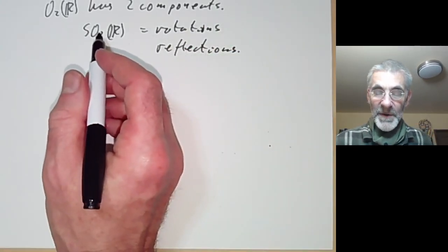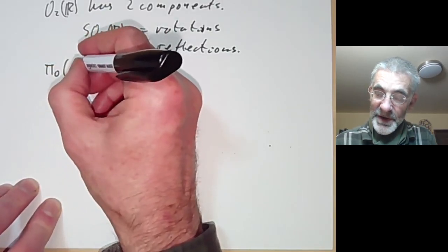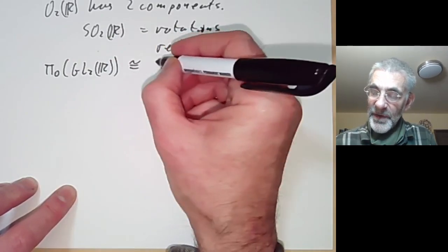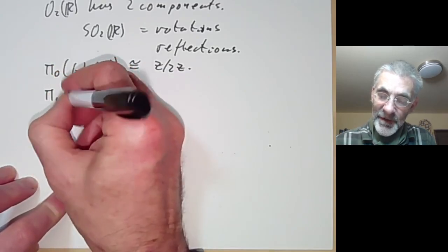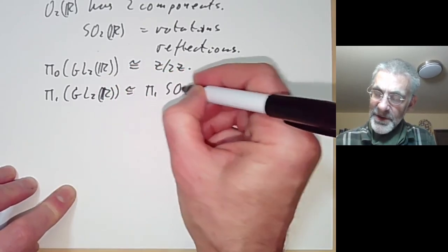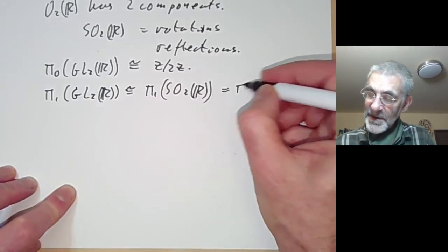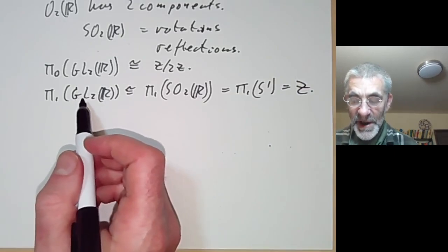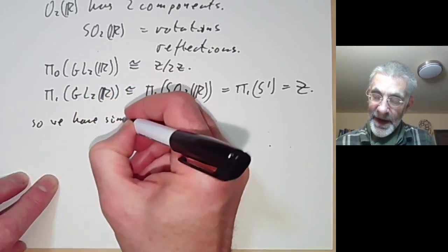The orthogonal group O2(R) has two components: one is SO2(R) which is just the rotations, and the other is the reflections of R². So we've got two components. The group of components of GL2(R), usually denoted π₀, is just isomorphic to Z/2Z. And π₁ of GL2(R) is isomorphic to π₁ of SO2(R). The group of rotations of R² is isomorphic to a circle, so this is just the fundamental group of a circle, which is isomorphic to Z. So the fundamental group of GL2(R) is actually Z.